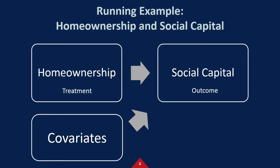As a running example, I will use my current project that I am working with Jane, which is the relationship between home ownership and social capital. Home ownership is not randomly distributed.